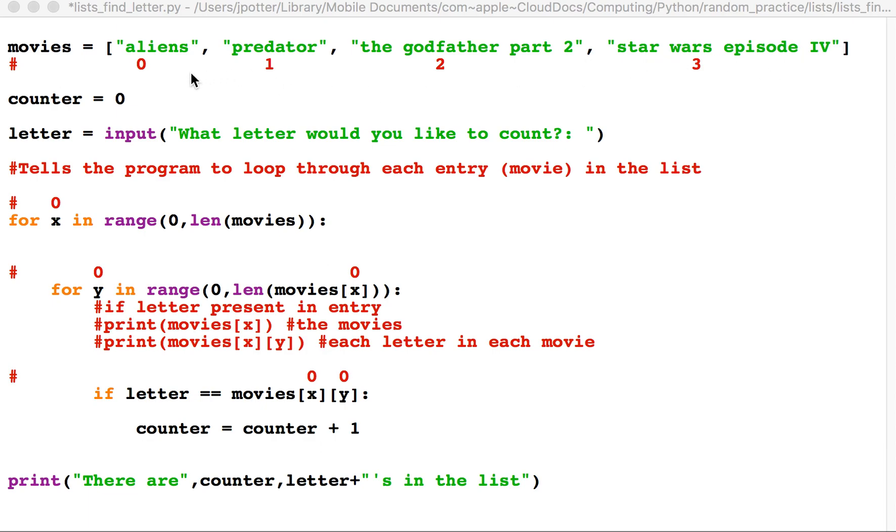Just as a quick reminder on how lists work: the first entry in a list is zero, the second one is one, third one is two, and so on. These are called index numbers, so the index number of 'predator' is one.